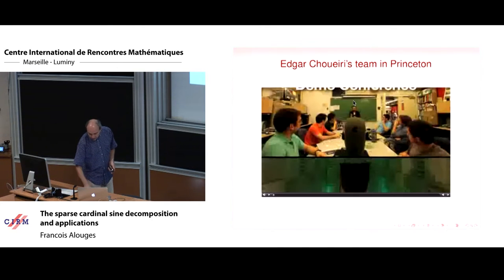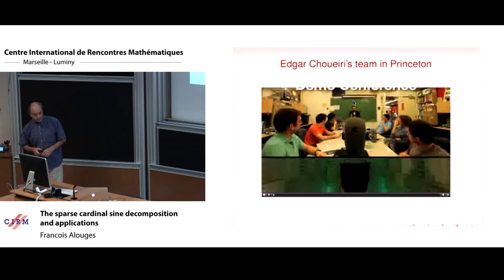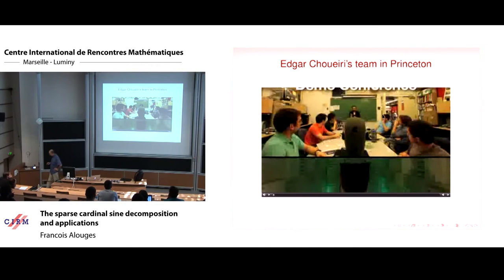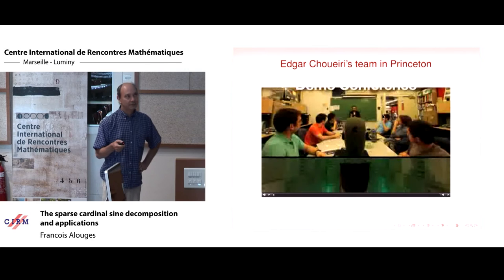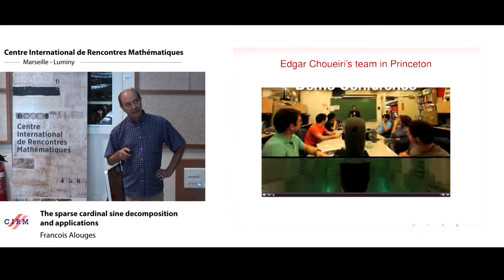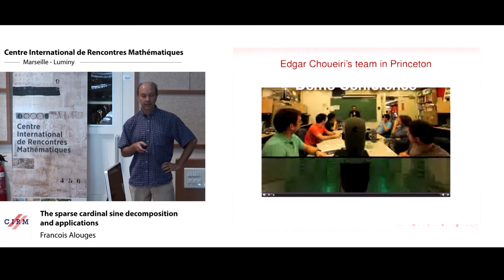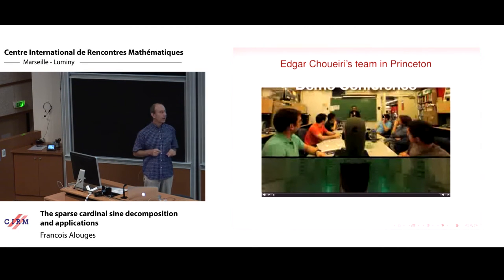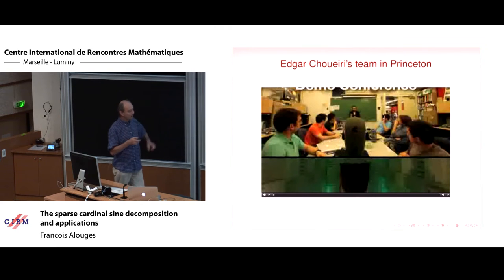Just to convince you that this is indeed possible, I would like to show you this film made in the lab of Edgar Schwery at Princeton. In a room with seven people, there is a binaural microphone head — a head with two microphones, one in each ear. Someone in an anechoic room listens to exactly what the head is recording in real time through headphones.